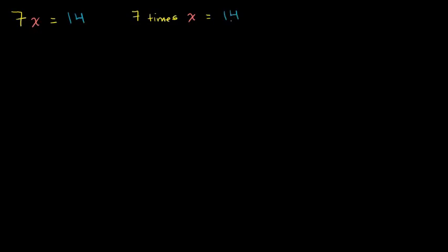Now you might be able to do this in your head. You could literally go through the 7 times tables and say, well, 7 times 1 is equal to 7, so that won't work. 7 times 2 is equal to 14, so 2 works here. So you would immediately be able to solve it — just by trying different numbers out, that's going to be a 2.